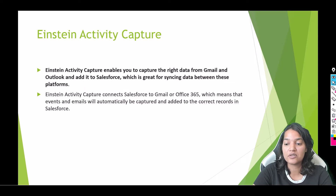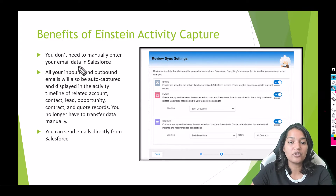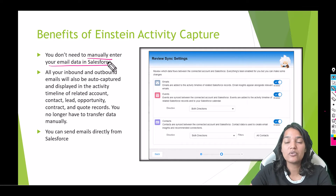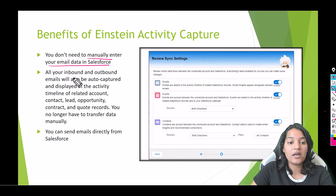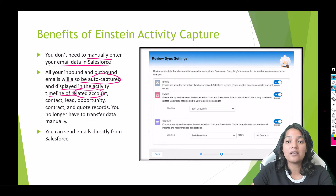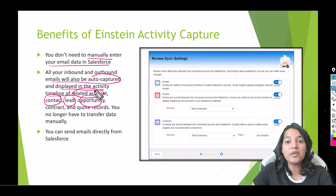Now let's cover the benefits of Einstein Activity Capture. You do not need to manually enter your email data in Salesforce. Emails you have sent to a particular customer don't need to be recreated within Salesforce — the syncing happens automatically. All your inbound and outbound emails will also be auto-captured and displayed in the activity timeline of the related account, contact, lead, opportunity, contract, and other records.